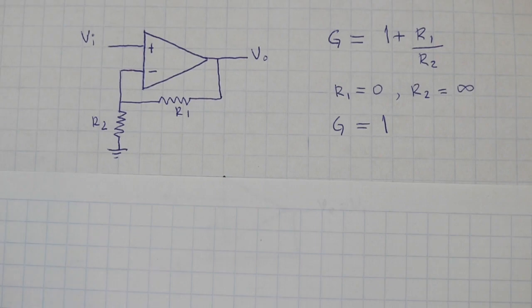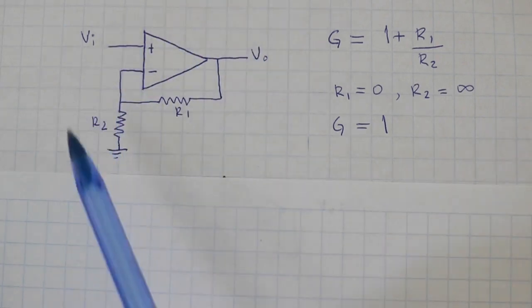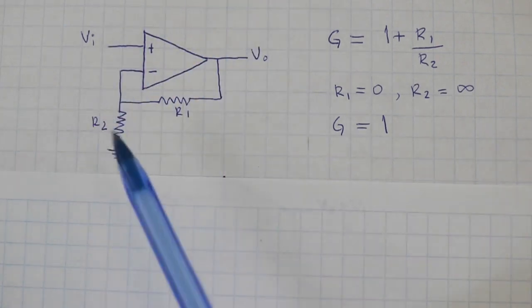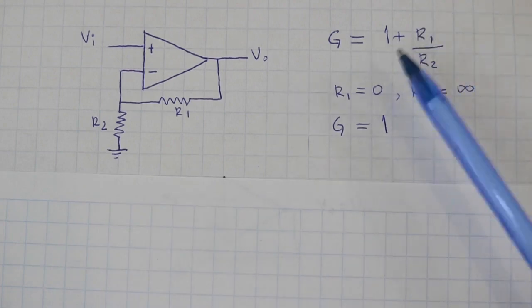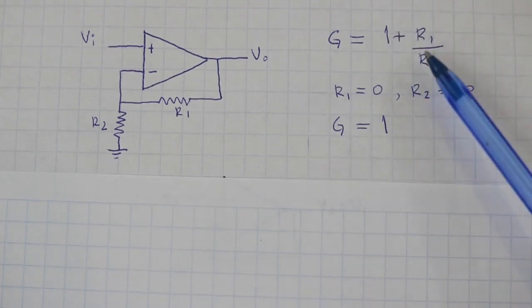In the previous video, we saw the non-inverting operational amplifier. This has gain given by 1 plus R1 divided by R2.